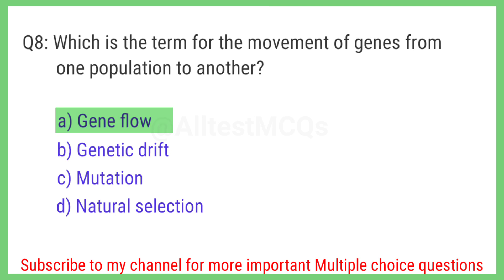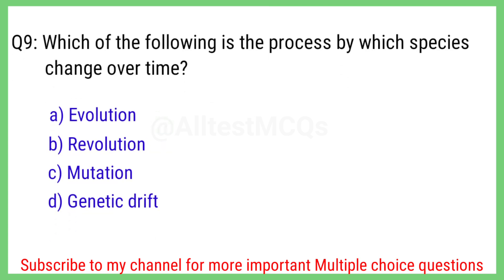Question number 9. Which of the following is the process by which species change over time? The right answer is option A. Evolution.